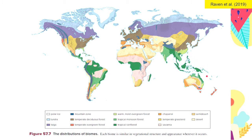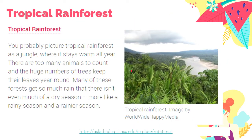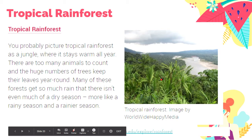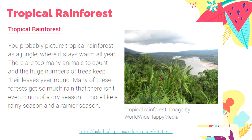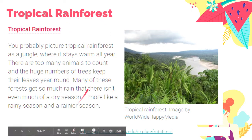Tropical rainforests are also found in some parts of Australia, near the equator or the tropical region of the globe. According to Ask a Biologist from Arizona State University, tropical rainforests are warm all throughout the year. There are too many animals to count and the huge number of trees keep their leaves all year round — they do not shed during autumn because there is no fall season. Many of these trees get so much rain that there isn't even much of a dry season — more like a rainy season and a rainier season.